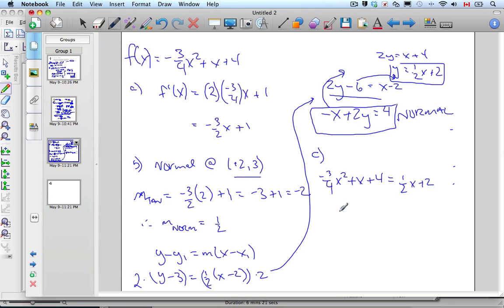Bring everything one side of the equation. Negative 3 quarters x squared. Subtract 1 half, so I get negative 1 half x. Subtract 2, and I get plus 2 equals 0.